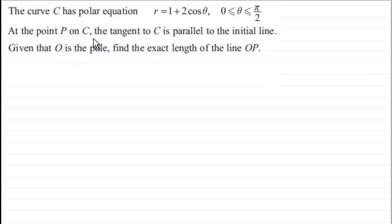And at the point P on C, the tangent to C is parallel to the initial line. Given that O is the pole, find the exact length of the line OP.